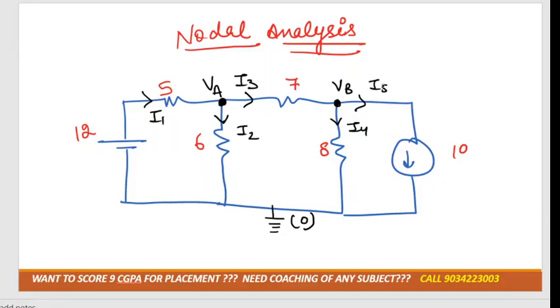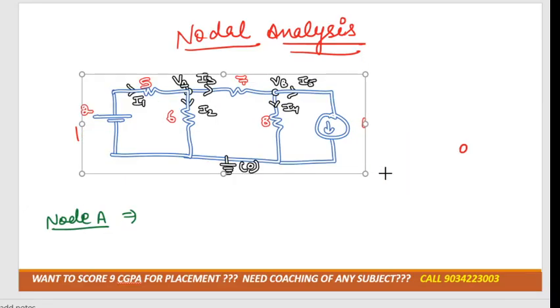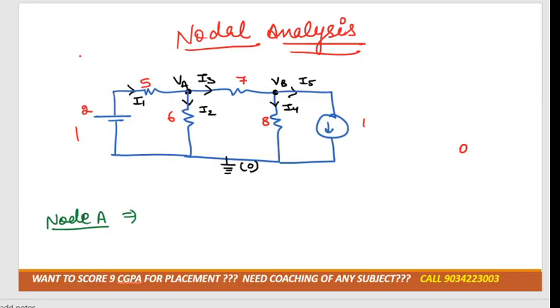For this we have to apply Kirchhoff's Current Law at node A. What does Kirchhoff's Current Law state? Sum of incoming current is equal to the sum of outgoing current. So incoming current is how much? Can I say that I1 is equal to I2 plus I3? The current which is entering into node A is I1 and current which is leaving the node is I2 plus I3.